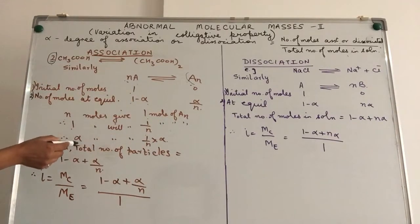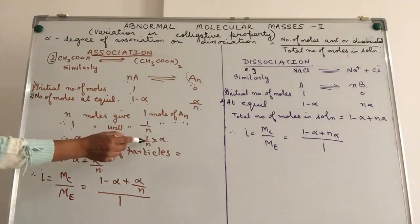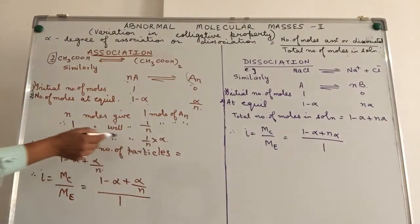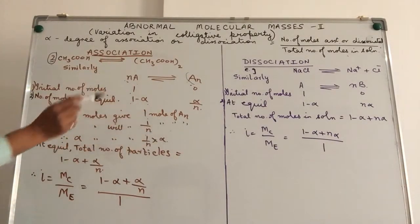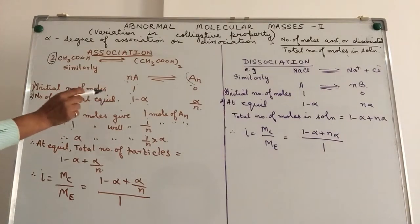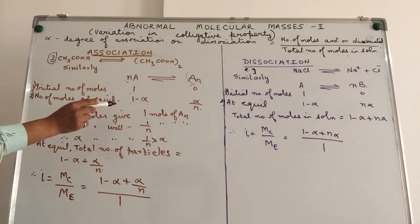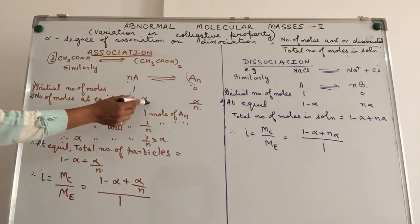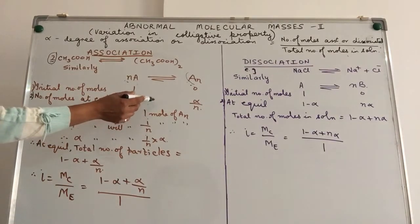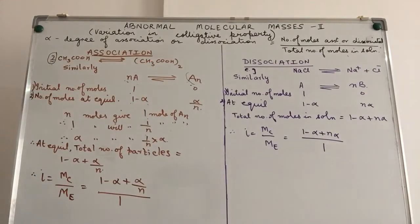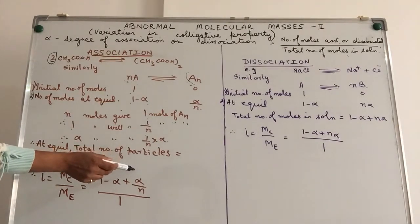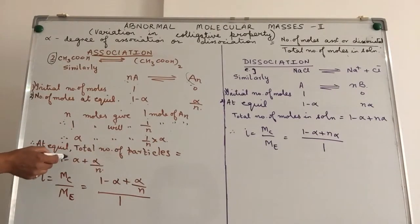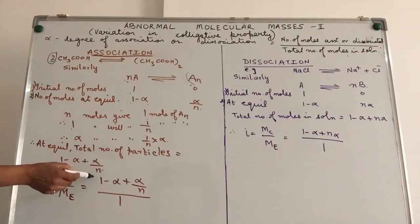So, how many moles of An will be formed if alpha moles of A undergo association? We are simply using unitary method over here. So, alpha will give us 1/n into alpha. In other words, the total number of particles that are now formed after association is 1-α particles of A and α/n particles of An. So, at equilibrium, the total number of particles which are there in the solution are 1-α + α/n.